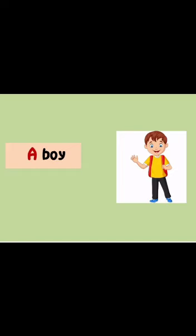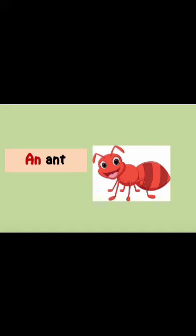Now, which picture is this? This is a boy picture. Boy means Ladka. The spelling of boy is B-O-Y. The beginning letter of boy is B, which is a consonant — not a vowel. The five vowels are A, E, I, O, U; all other letters are consonants. So for boy we use A. We say: a boy.